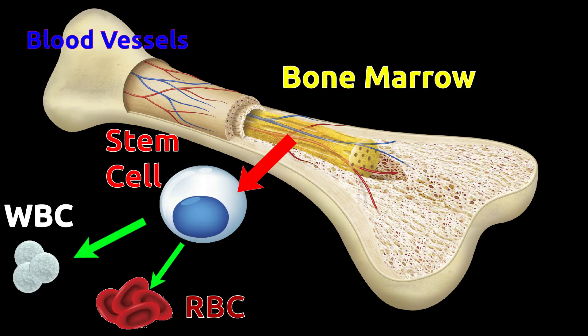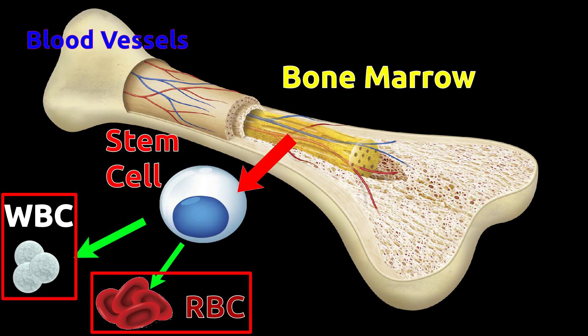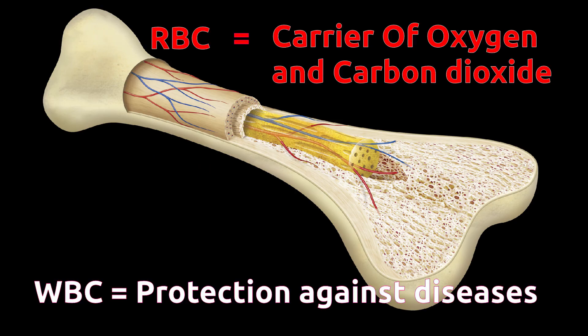5. Production of Blood Cells. Bone marrow, which is located in the inner part of bone, produces red and white blood cells. Red blood cells are responsible for transportation of oxygen and carbon dioxide in blood. White blood cells act as a protective system against infections and diseases, and are also known as the immunity system of our body.